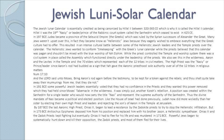Like the house of Israel had done previously, Judah now did more wickedly than her sister by electing their own high priests and leaders and rejecting the sons of Aaron in the temple at Jerusalem. In 187 BCE, the last Aaronic high priest, Onias III, began to lead a resistance by the Zadokite priests to try to stop the Hellenistic infiltration. But in 175 BCE, Antiochus Epiphanes deposed him from his position and replaced him with his brother Jason, a Hellenistic sympathizer. Onias III and the Zadok priests kept fighting, but eventually Onias III had to flee for his life and he was murdered in 171 BCE. This was the last rightful Aaronic high priest in the temple at Jerusalem. Powerful Jews began to systematically hunt down and kill their opposition, which were the Zadok priests, and most of them fled for their lives.